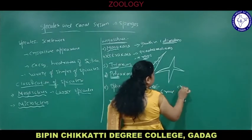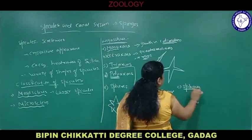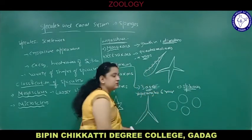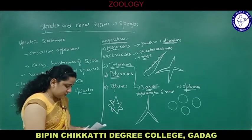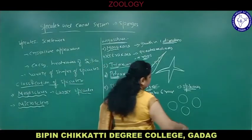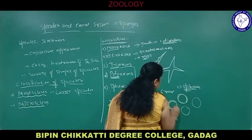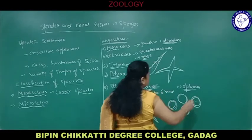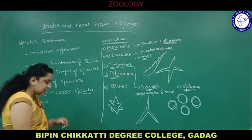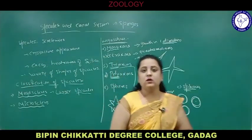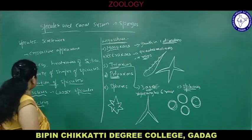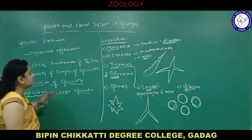Fifth are spheres — they are round, spherical bodies in which growth is concentric around the center. They also give structural support to the sponges. Spicules are basically giving structural skeletal support to the body of Porifera, and they are made up of calcium carbonate or hydrates of silica.